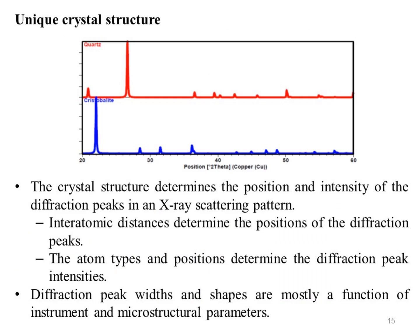The crystal structure describes the atomic arrangement of a material. The crystal structure determines the position and intensity of the diffraction peaks in an X-ray scattering pattern. Inter-atomic distances determine the position of the diffraction peaks. The atom types and positions determine the diffraction peak intensities. The diffraction peak width and shape are mostly a function of instrument and microstructural parameters. In case of quartz you will get a specific diffractogram pattern, and in case of cristobalite you get a different diffractogram.